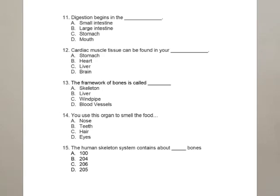Question 12: cardiac muscle tissue can be found in your dash. Cardiac muscle is nothing else — that is the heart. You can see this in the first chapter on the muscular system. Question 13: the framework of bones is called skeleton. So skeleton is the right answer.